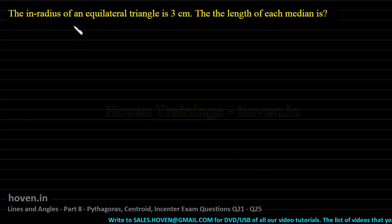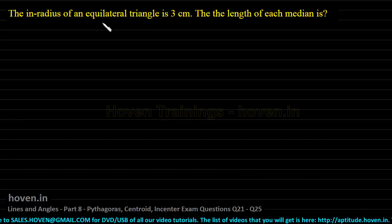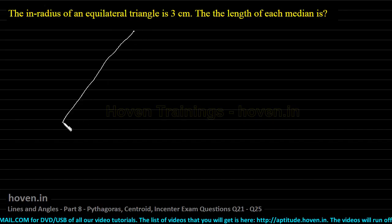The inradius of an equilateral triangle is 3 cm. Then the length of each median is what? The triangle has been given as equilateral. Let us draw an equilateral triangle here.